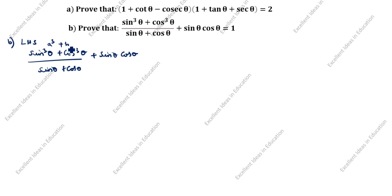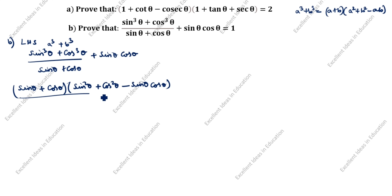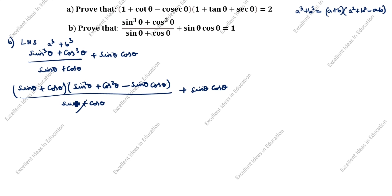This is an A³ + B³ format. What is the A³ + B³ formula? A³ + B³ = (A + B)(A² + B² − AB). Now we split as per this formula. A is sin θ, B is cos θ. So we get (sin θ + cos θ)(sin²θ + cos²θ − sin θ cos θ) divided by (sin θ + cos θ), plus sin θ cos θ. Here sin θ + cos θ cancels.